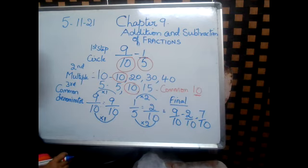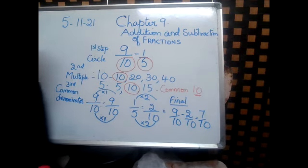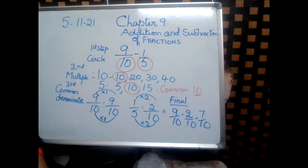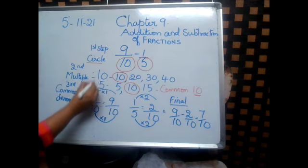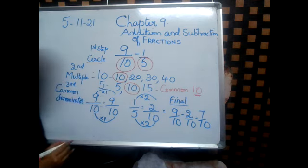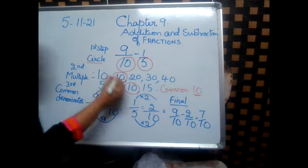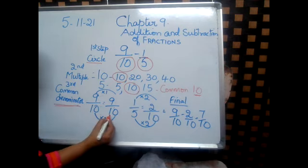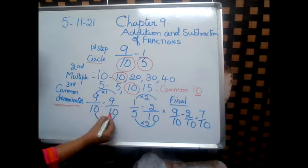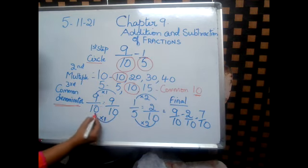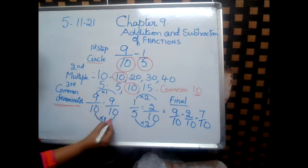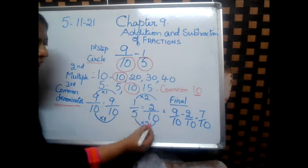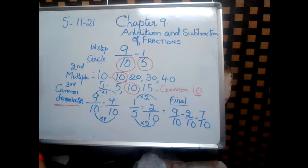Because the denominator is common, it is easy to subtract. So, I hope you understood the addition and the subtraction. The first step is circle the denominators. The second step is find the multiples — you can keep on writing the multiples you want, but 4 will be enough. Circle the common multiple. The third important step is to use the common denominator. Put the common denominator and check how many times you got the common denominator from the actual one. So, 9 by 10 minus 2 by 10 equals 7 by 10.